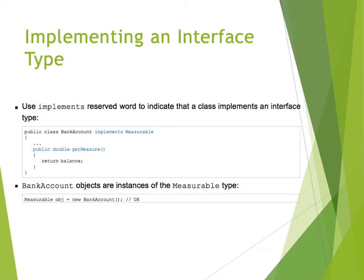BankAccount objects are instances of the Measurable type because BankAccount implements Measurable. You can instantiate a new BankAccount and assign it to a Measurable variable: 'Measurable obj = new BankAccount()'. This is completely valid — it is similar to casting a subclass to a superclass. Just as a BankAccount is an Object, here a BankAccount is a Measurable because it implements the Measurable interface.